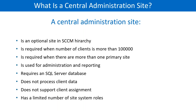Central administration site is needed only when you have these two conditions. It does not process client data. Primary site is a mandatory site — it manages clients in a well-connected network, requires SQL Server database, and supports client assignment. Secondary site is also optional, used for users in branch offices.